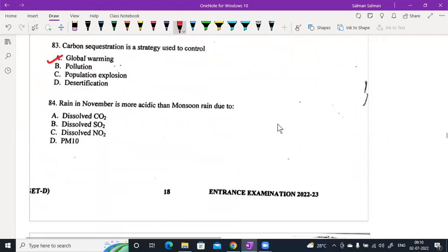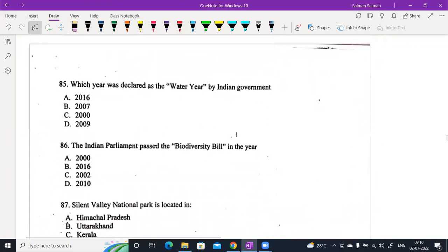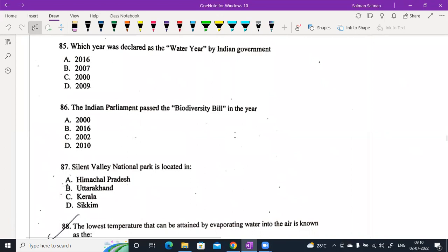1984. Rain in November is more acidic than monsoon rain due to the presence of dissolved sulfur dioxide. Which year was declared as water year by Indian government? This is the year 2007. The Indian parliament passed the Biodiversity Bill in the year 2002. Silent Valley National Park is located in Kerala.